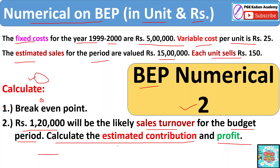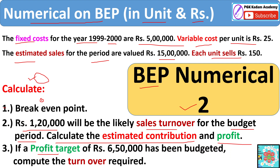The estimated contribution is where to calculate. The third condition is the profit target of rupees 6 lakh 50,000 for this budgeted year. We have to compute the turnover required — that is, how much sales we have to do to achieve this profit target.